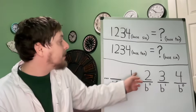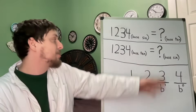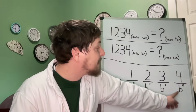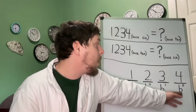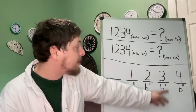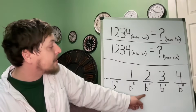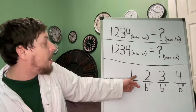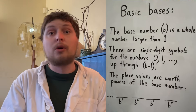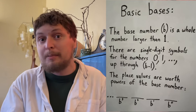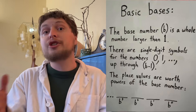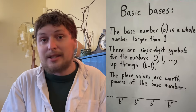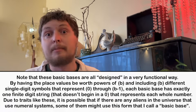In base 10, the number 1234 is the quantity we associate with that string because it's four copies of 10 to the zero (which is four ones), plus three copies of 10 to the first (three tens), plus two copies of 10 to the second (two hundreds), plus one copy of 10 to the third (one thousand). Note that these rules are also why base one isn't included among basic bases — if you went from zero to b minus one, you'd just be using the digit zero, which won't work. So basic bases can have any whole number two or larger.